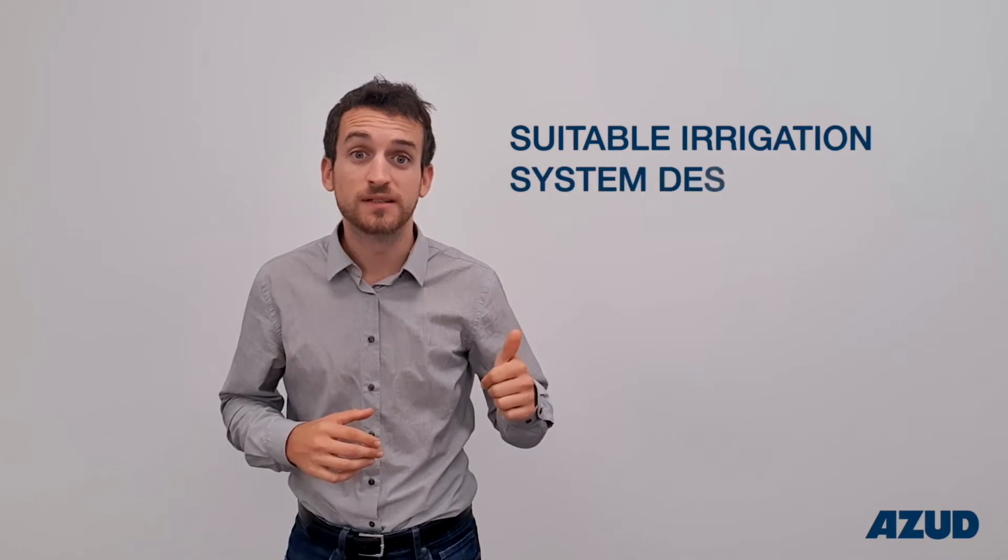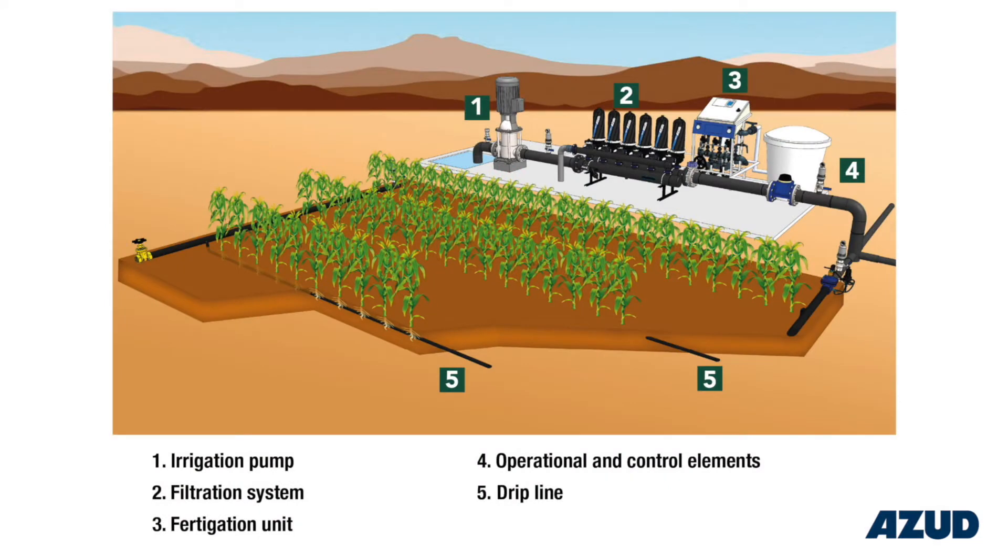The main points we need to focus on in order to avoid any further problems within our irrigation system are the following ones. A suitable and accurate hydraulic design according to the project requirements, which should guarantee the desired working pressure in each emitter.